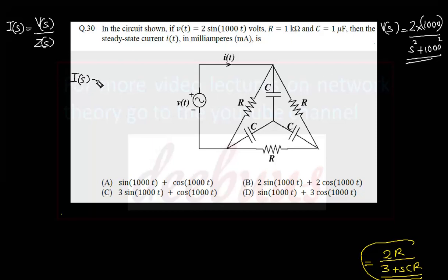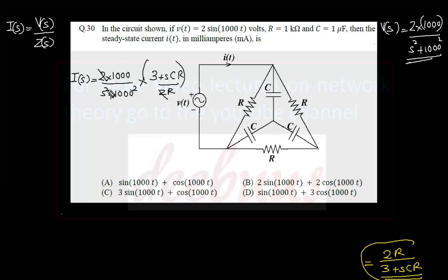Substituting: I(S) = V(S)/Z(S) = [2×1000/(S²+1000²)] × (3+SCR)/2R. The two cancels. Now substituting the values: R equal to 1 kilo ohm and C equal to 1 micro farad. R equals 1 kilo ohm, so we can cancel this R and this 1000. CR = 1×10⁻⁶ × 10³ = 10⁻³.